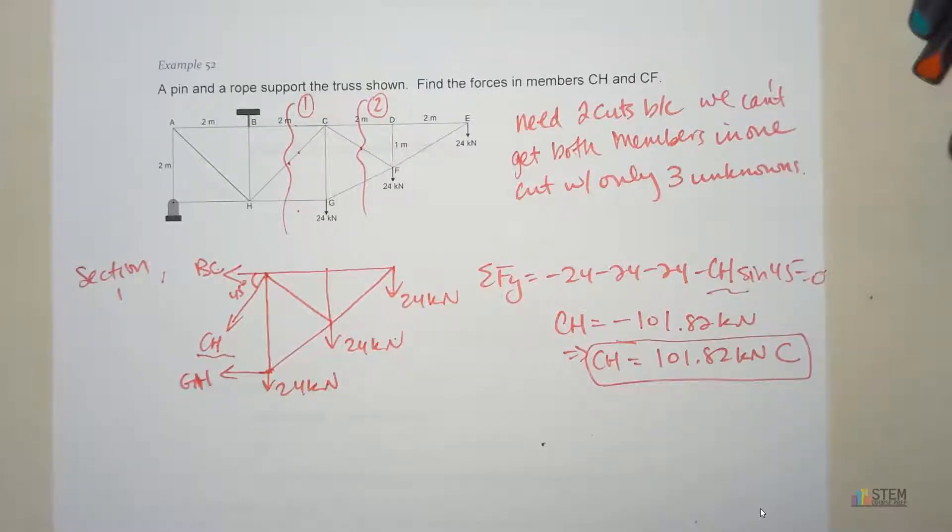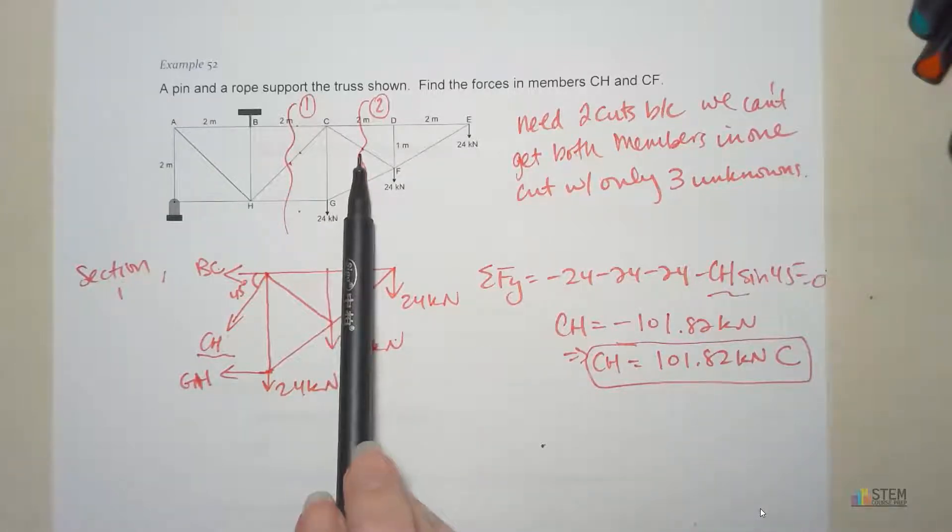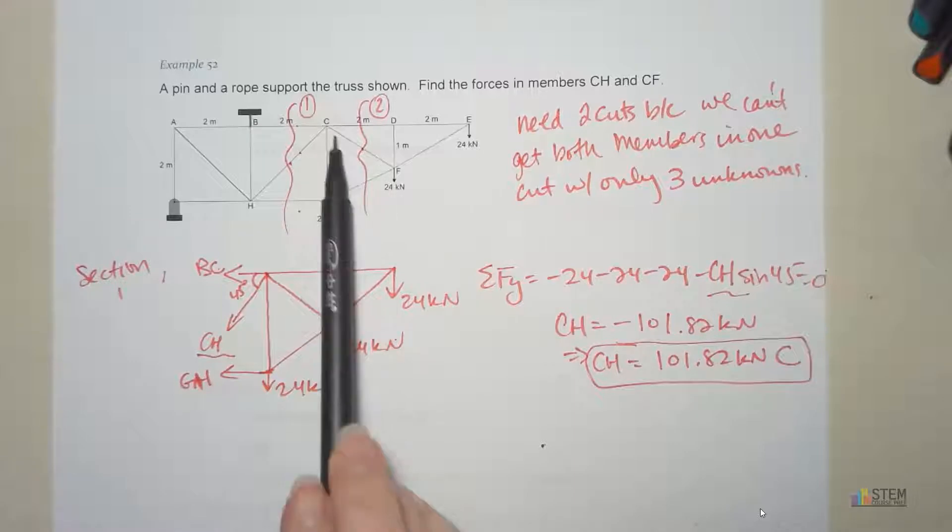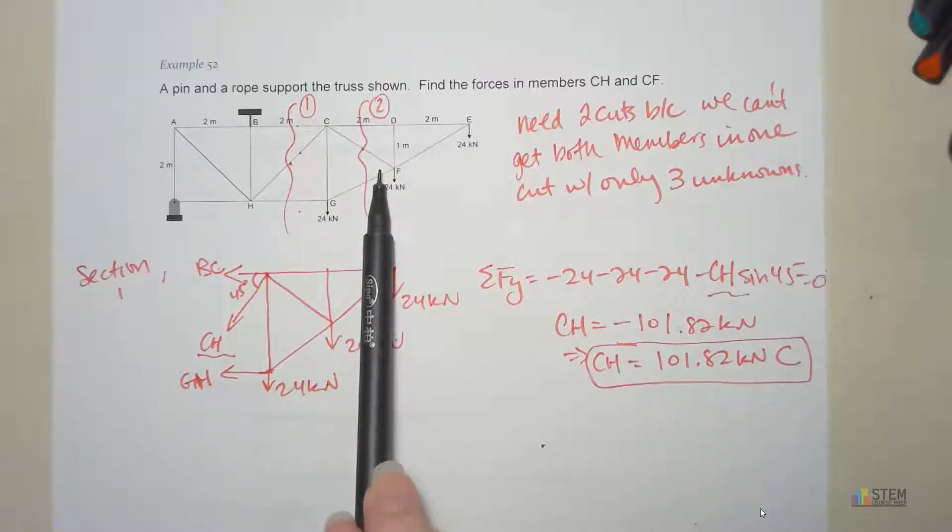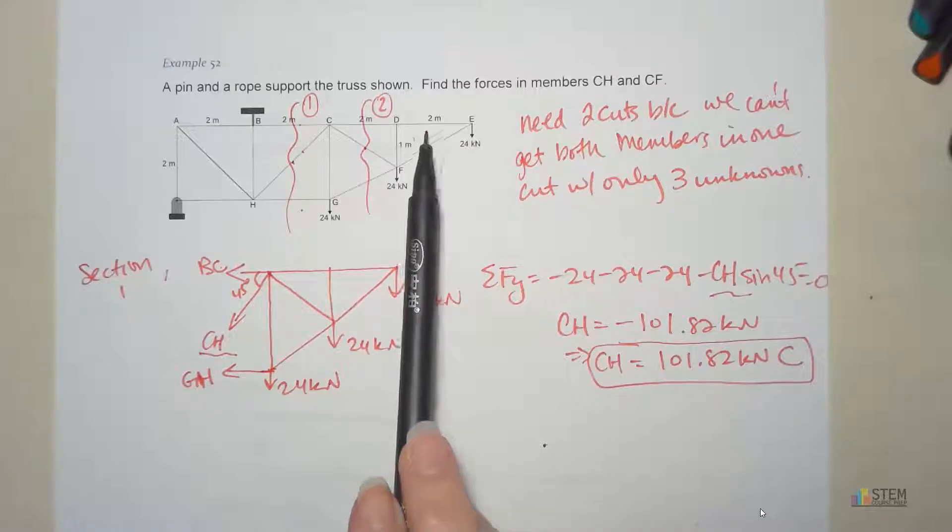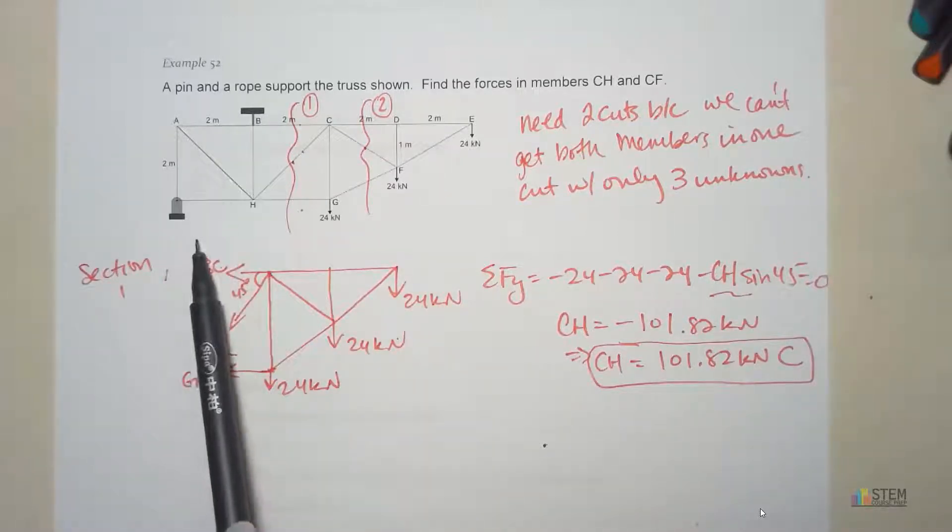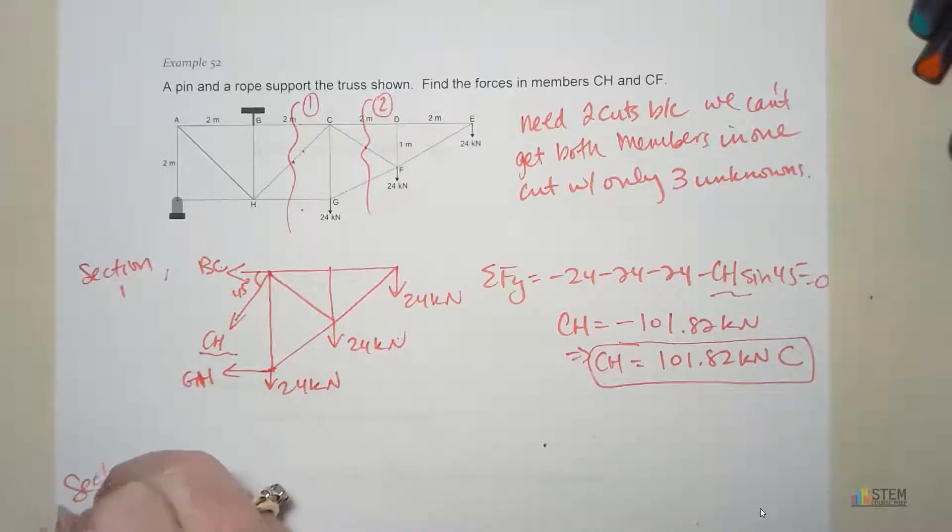That was easy enough, right? Definitely easier than method of joints. Now that we've got this, what we want to do is go to section two. So let's go to section two. This will allow us to find the force in this member CF. Now again, you've got to choose left side or right side. We're going to choose the right side again. That way we don't have to worry about the rope and the pin. Just makes it easier.